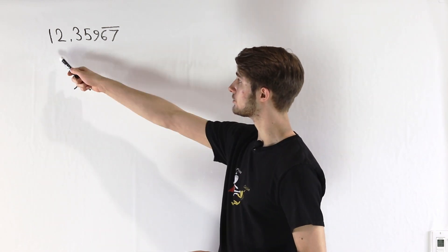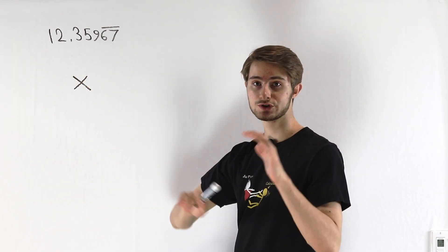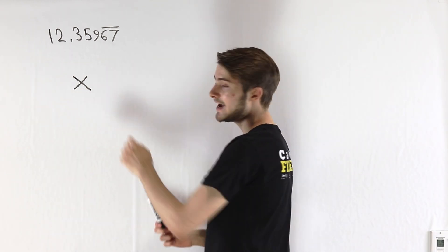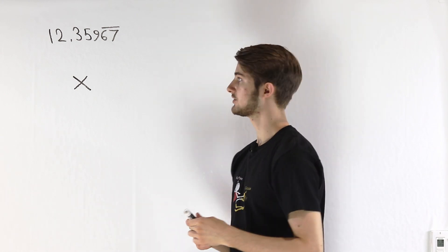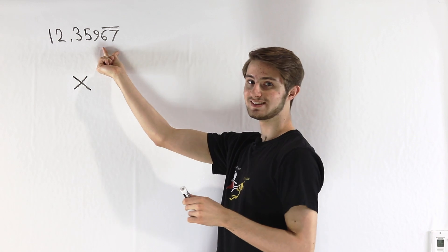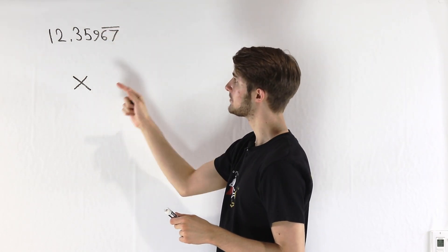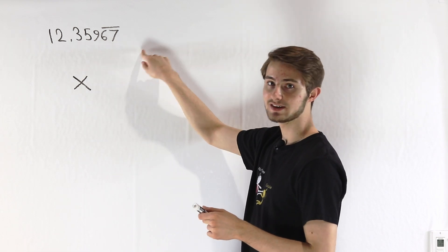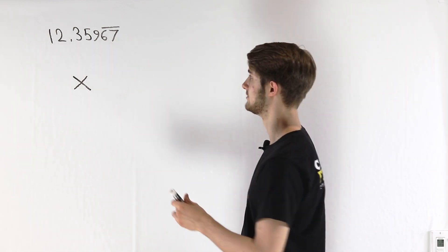I'm also going to go through every step with an example just so we can visualize what's going on. To start off, let's say we have a number X which has a repeating decimal. In this case we have 12.359, and then this 67 with a bar over it means that this is the same as 3596767676767 all the way to infinity.